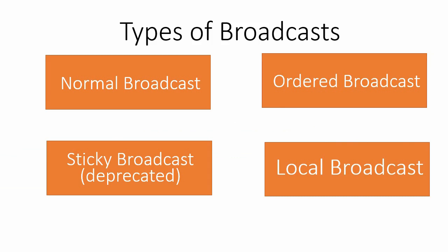There are four types of broadcast receivers: normal broadcast, ordered broadcast, sticky broadcast, and local broadcast. Sticky broadcast is deprecated and no longer used. The ones commonly used today are normal broadcast, ordered broadcast, and local broadcast. I will explain all of these in upcoming videos.